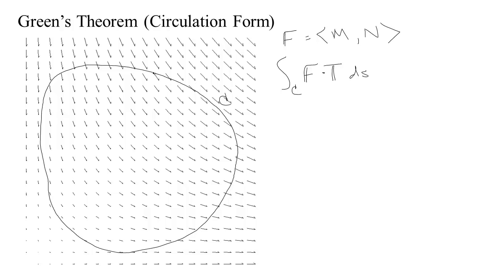F dot T — if you have a particular point on the curve, here's the vector F and the unit tangent pointing this way. So F dot T is really measuring the component of the vector field F in the direction of T — it's the length of the projection of F onto T. So we're measuring how aligned the vector field is to the direction of motion, multiplying that times the length of the curve in that area and summing those up. If this is a fluid flowing, we're measuring how the fluid tends to circulate along the curve — hence the name circulation.